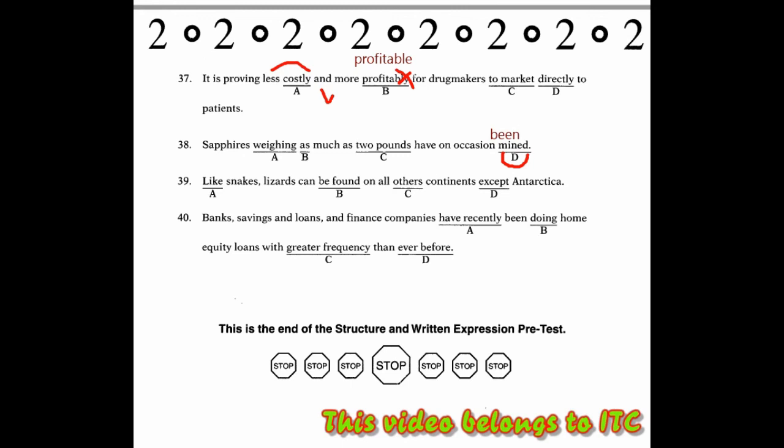Number 39. Like snakes, lizards can be found on all their continents except Antarctica. Then we look at which part is wrong. The error is in part C. In part C, continents is a noun. 'Others', if it has an S, becomes a pronoun. So we must remove the S, making it an adjective. So the error in section 39 is part C.